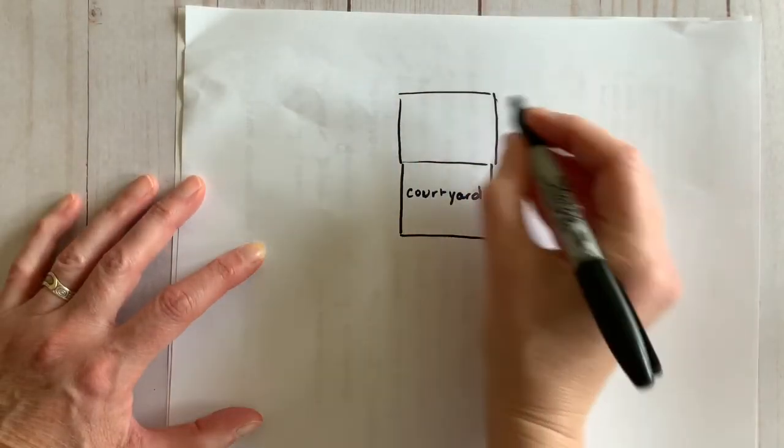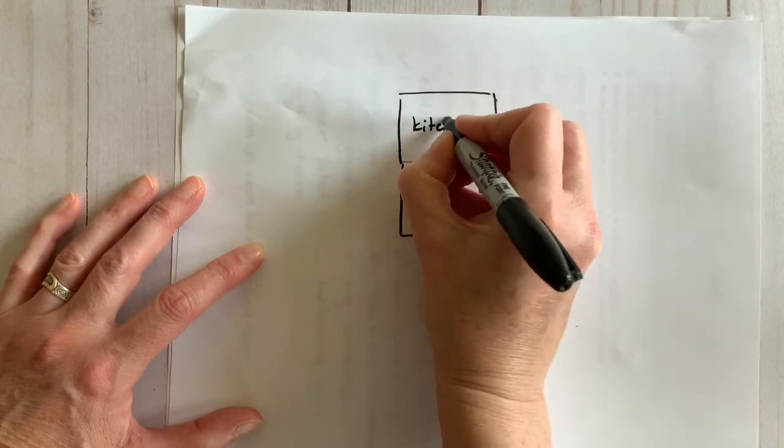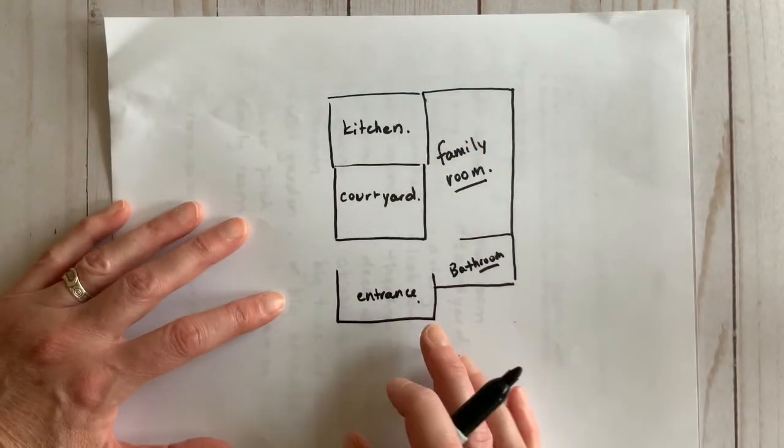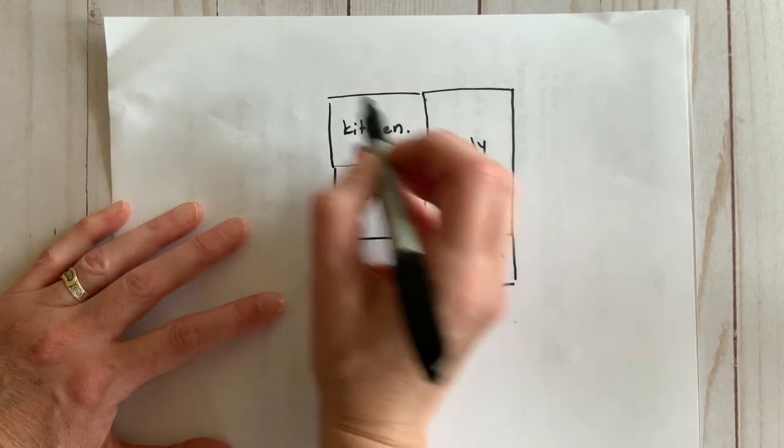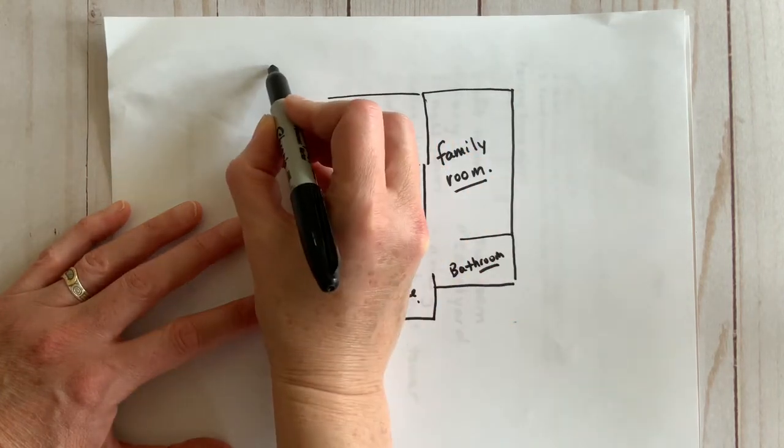I recommend sketching one room at a time and thinking about where each room should go in relation to the other. I would like a deck on my first floor, so I'm going to sketch that too.